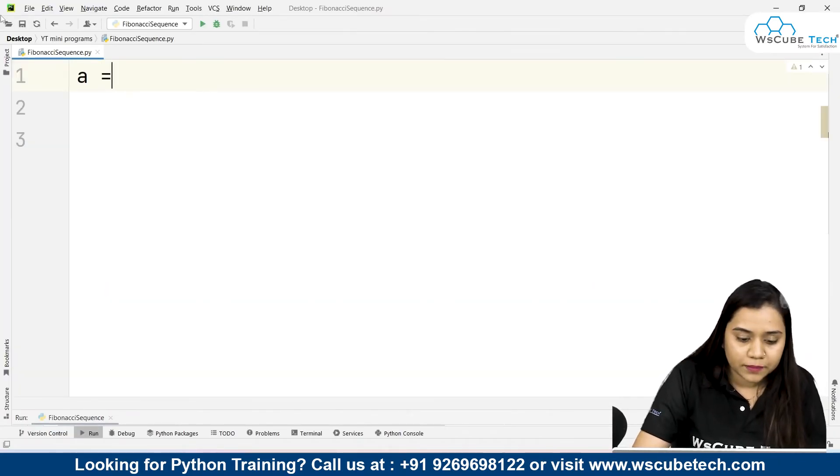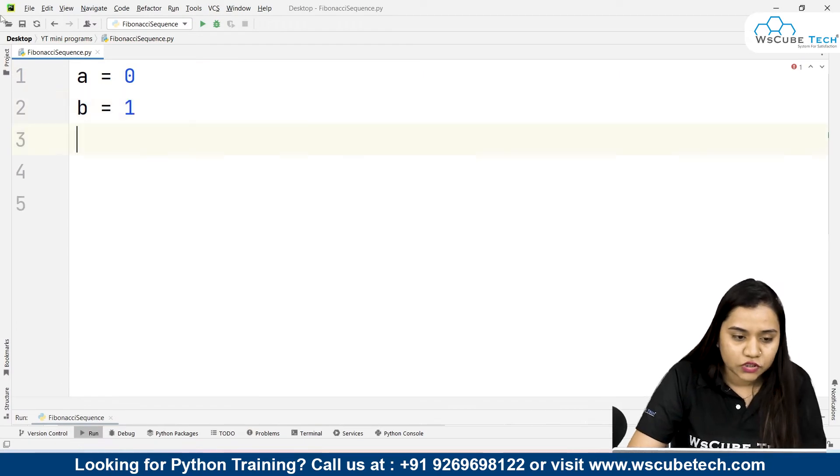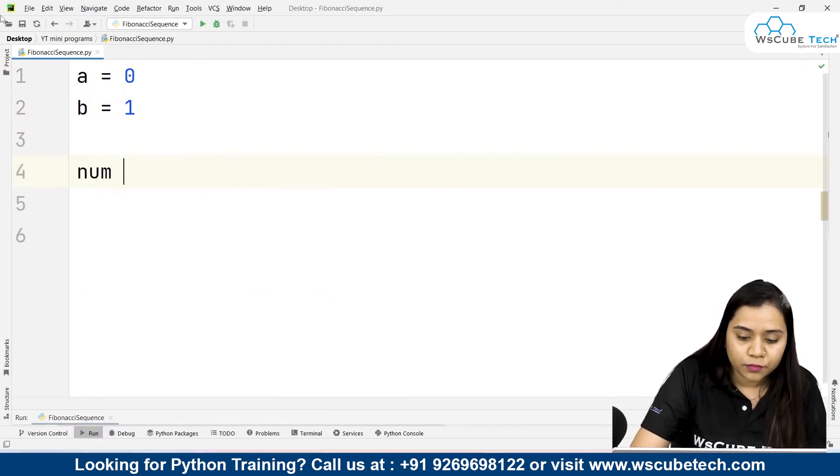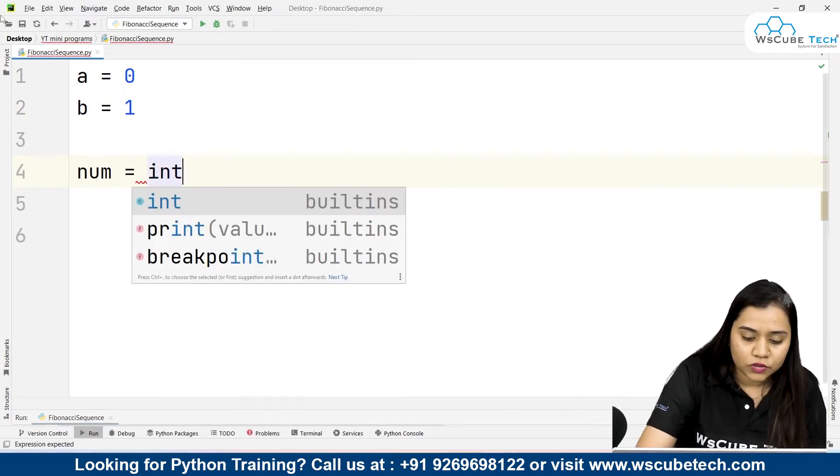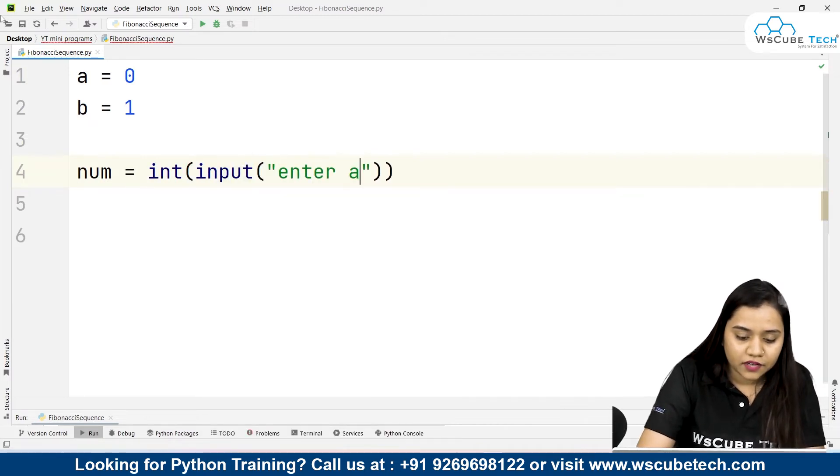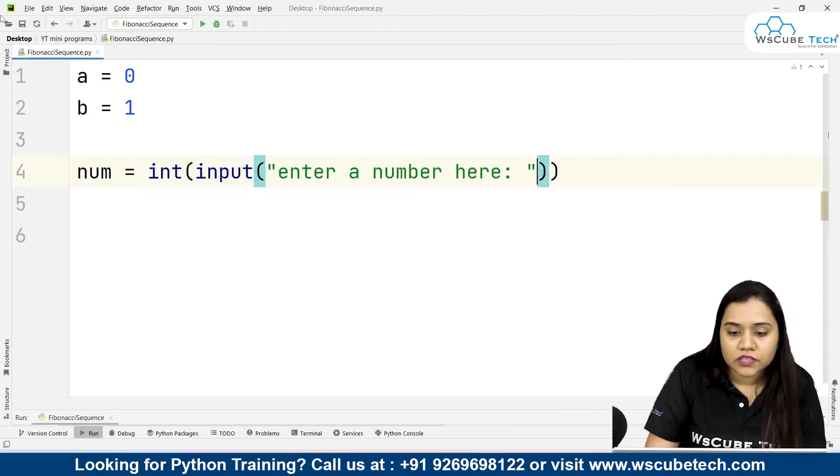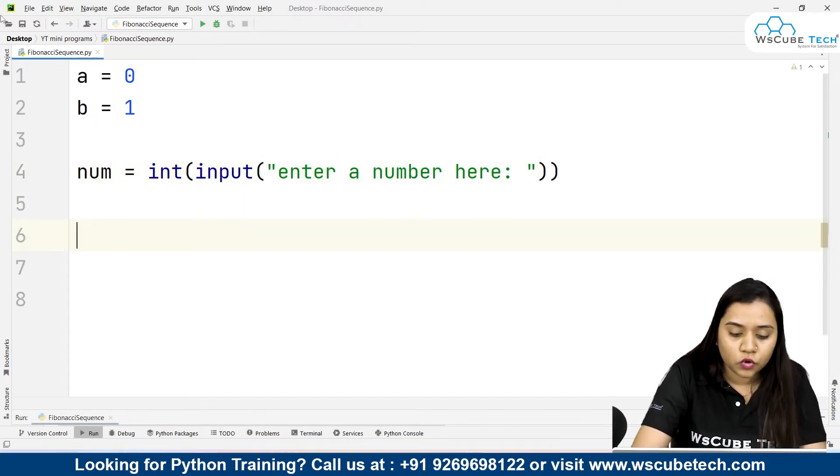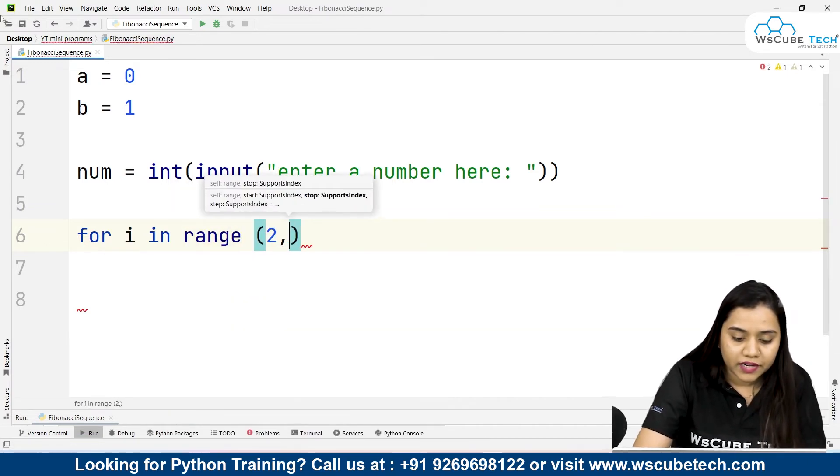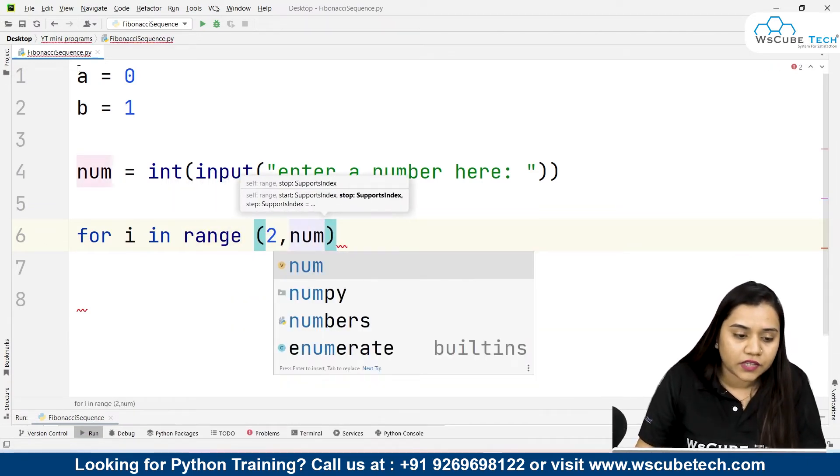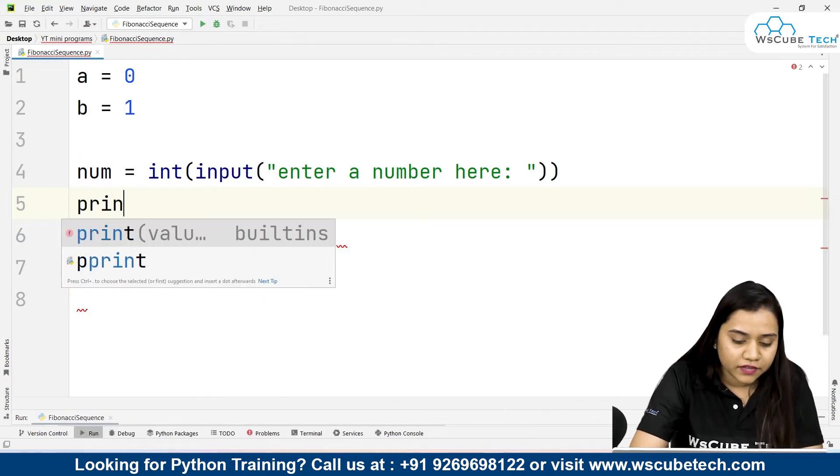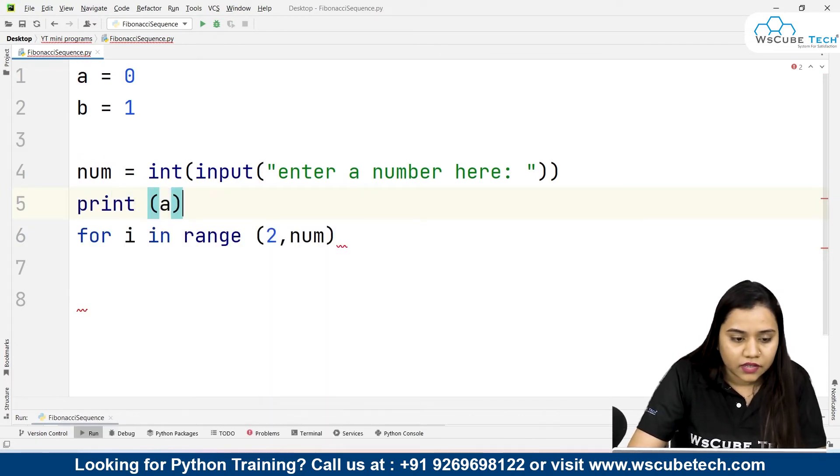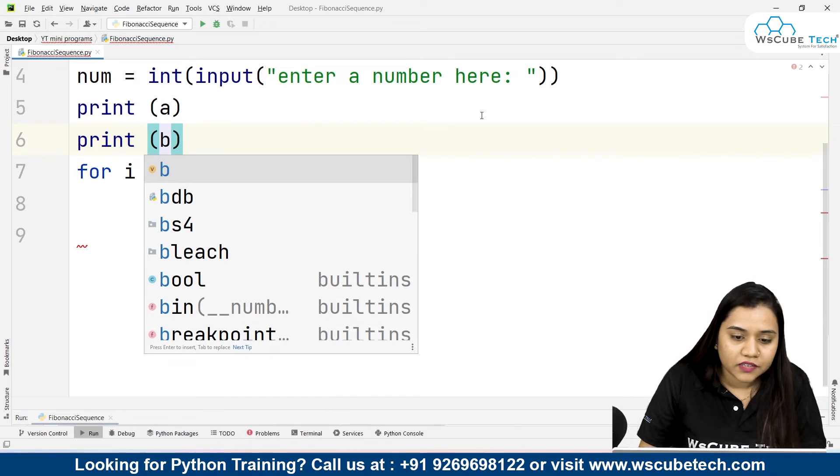So here as I said we need 2 variables. A is equals to 0 and B is equals to 1 initially. After that we will be taking the input from the user that number is equals to int input. Enter a number here. Now up to this number sequence will be obtained. Now what I will be doing, I will be using a for loop over here. That for i in range, 2 to up to that number. Before taking the range, let's print A and B as well. That print A and print B. So first two elements will get printed.